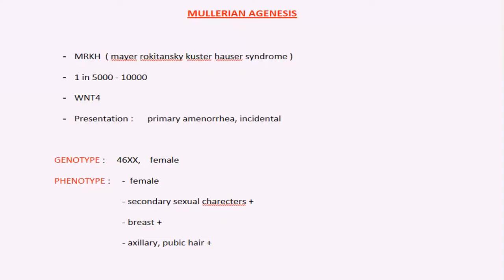The incidence of this condition is one in five to ten thousand females. The etiology is not clearly known, but a mutation in the gene called WNT4, located on chromosome 1, has been implicated in some atypical Mullerian agenesis cases.